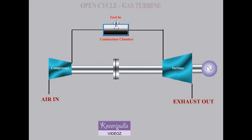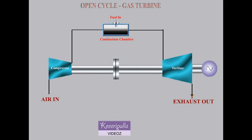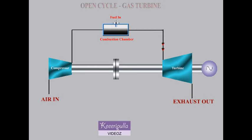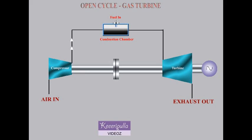After compression, the fuel is burnt with this air in a combustion chamber. The hot products of combustion are then expanded in the turbine to develop power. The exhaust from the turbine is expelled to the atmosphere.